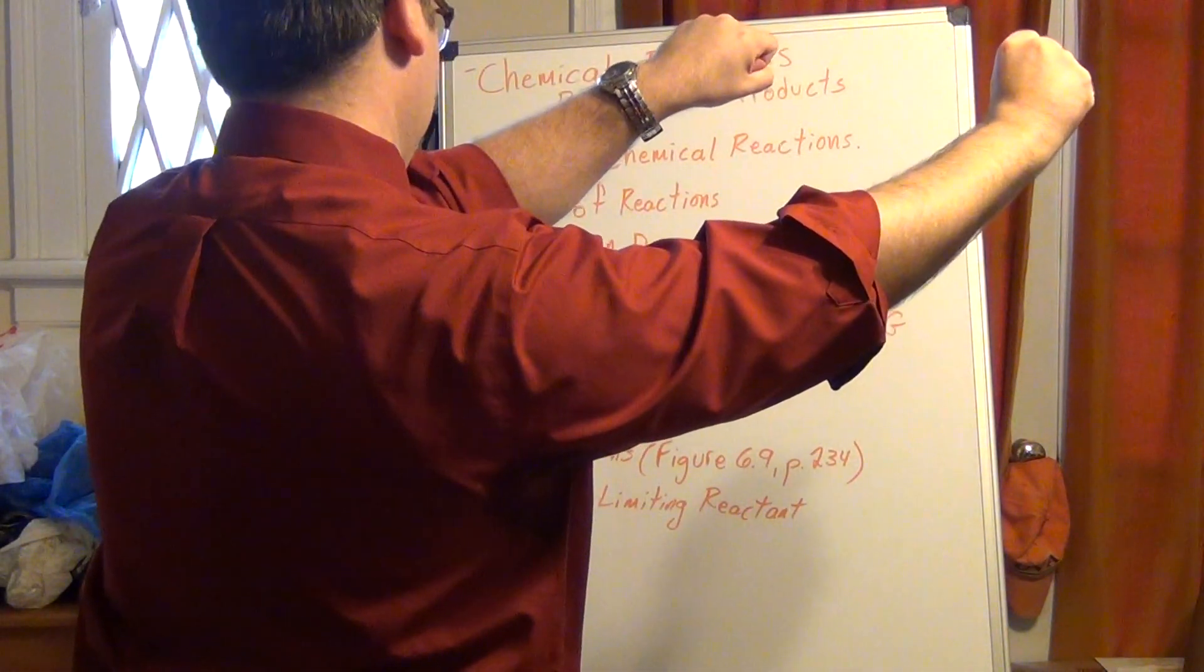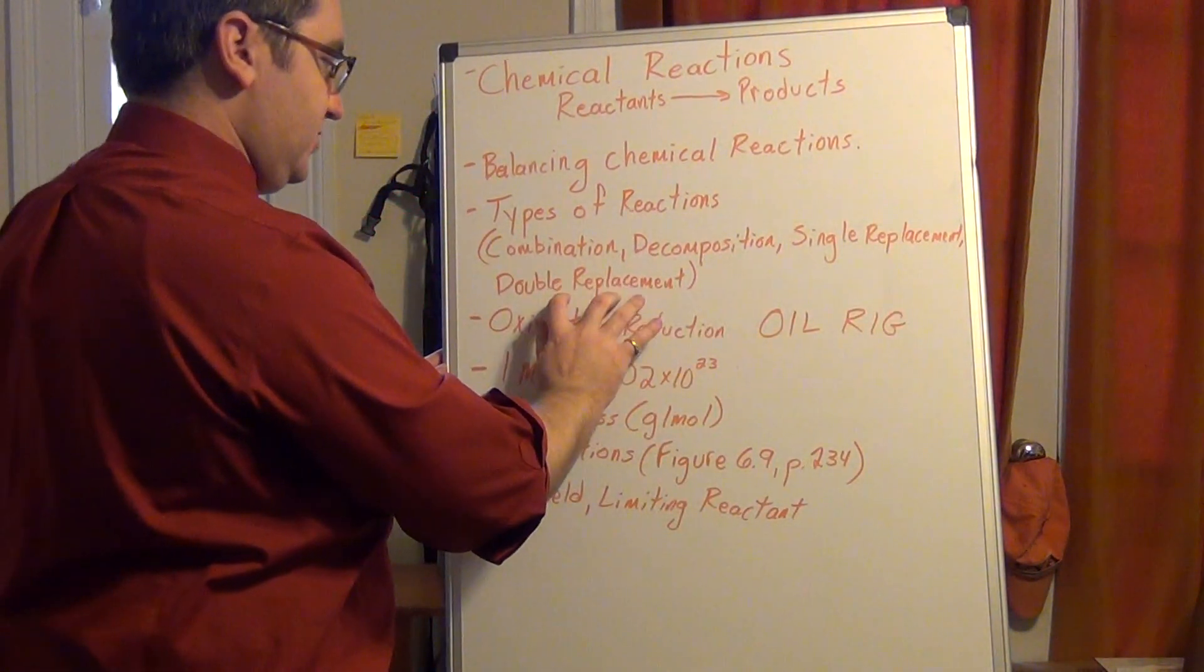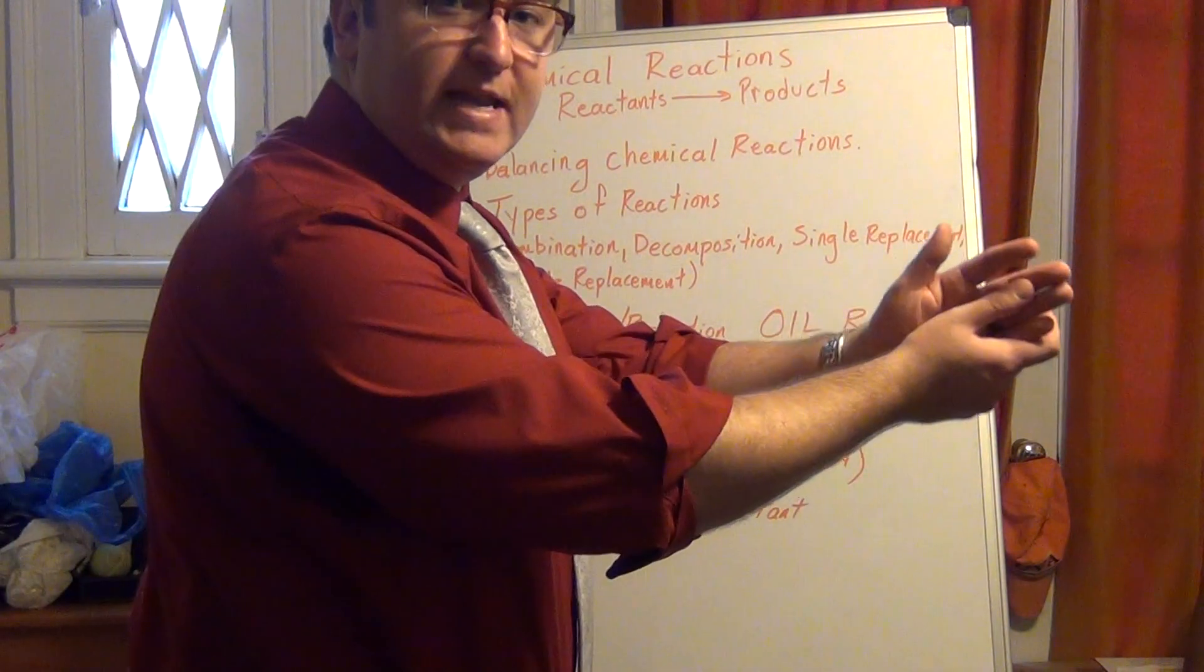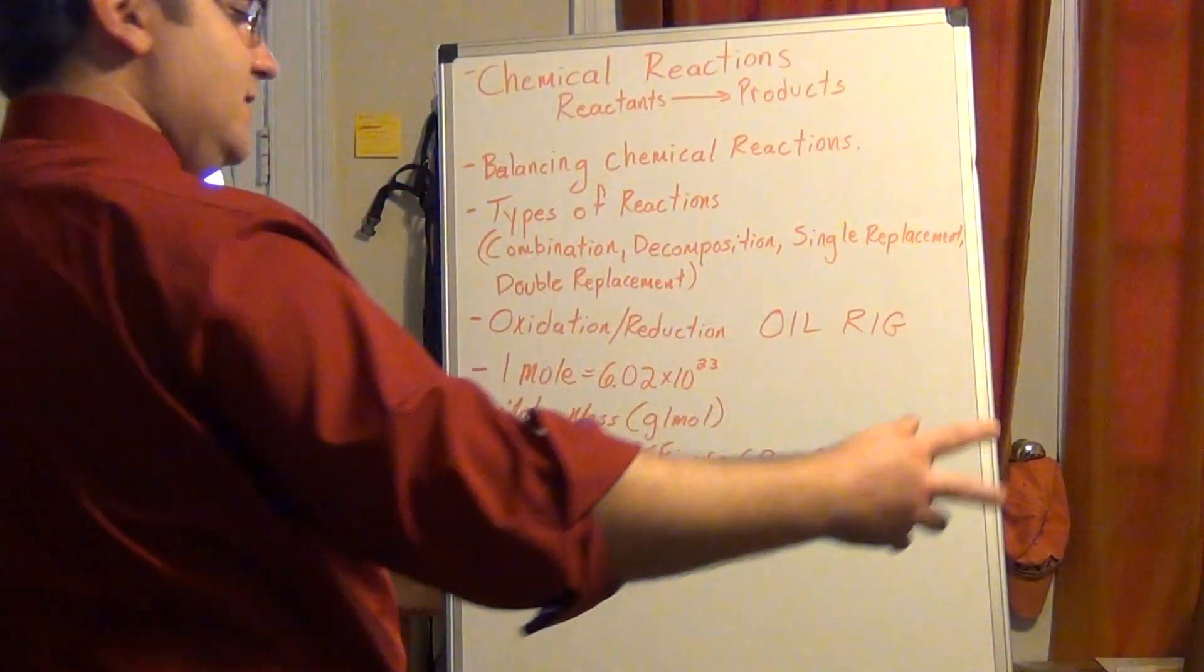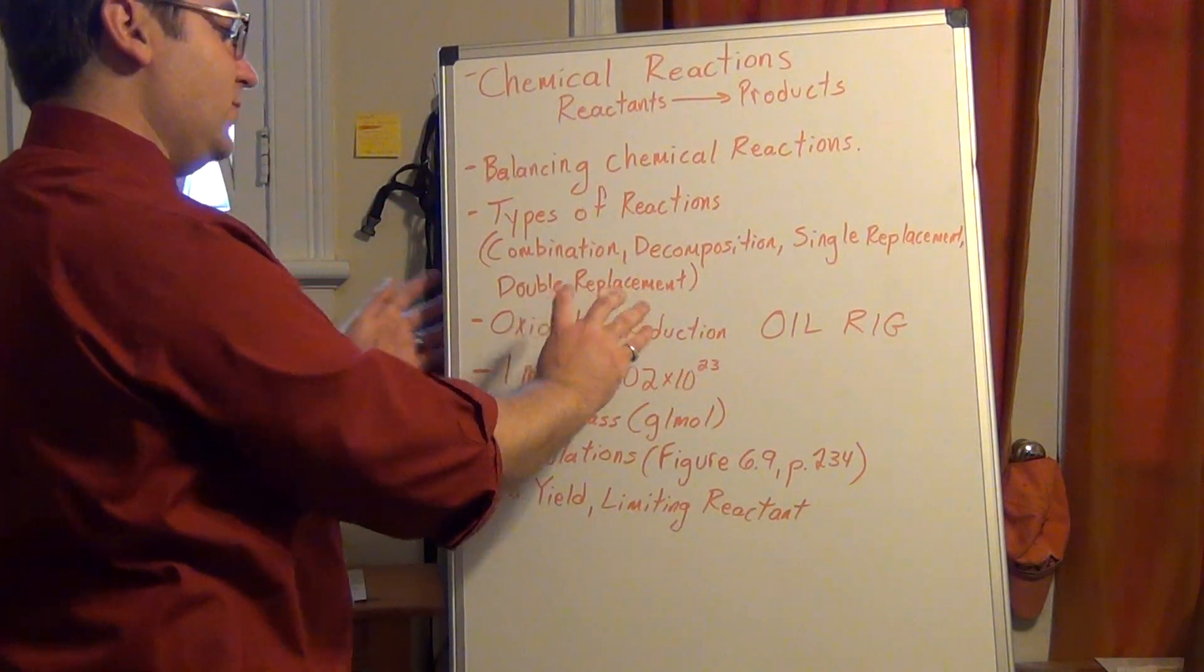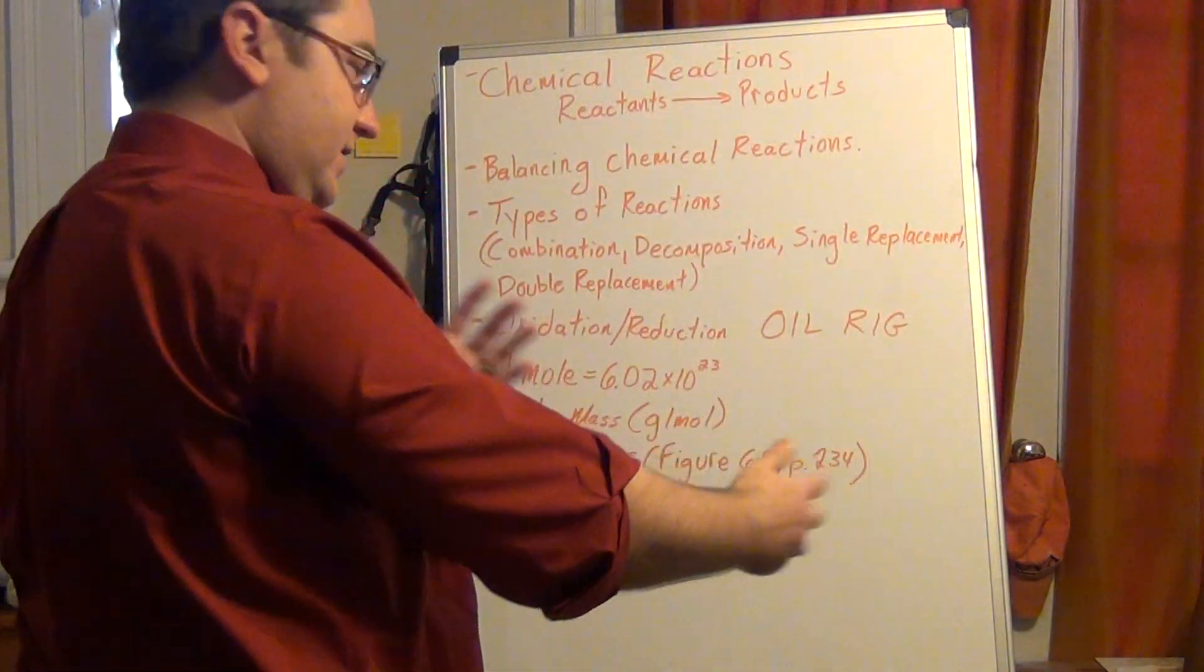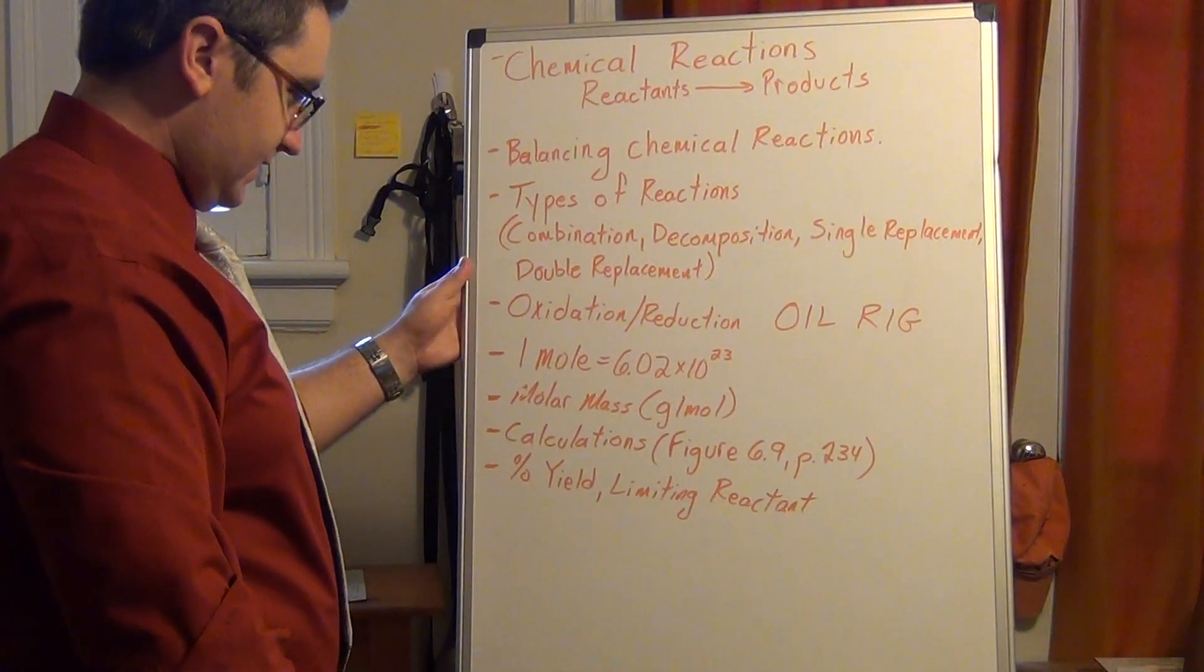Opposite of a combination reaction is going to be your decomposition. You'll start with one component usually, and then it'll undergo the reaction and break off into its individual components. The last two are going to be single replacement and double replacement. In my mind, I usually think of these like dances. If you have two people dancing together and then one person cuts into that dance, you'll have one person that is left out and then the two new people will be dancing. That'll be like a single replacement. A double replacement will be where you have two couples dancing together and then they will swap partners, kind of like a do-si-do.